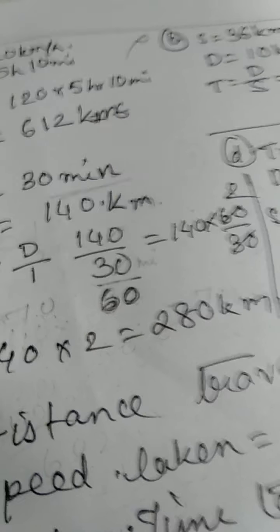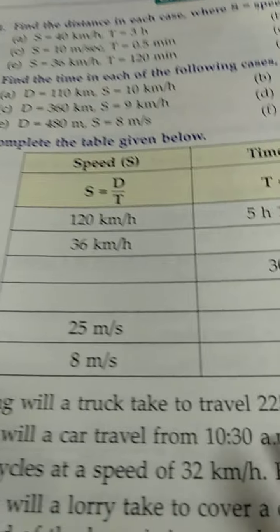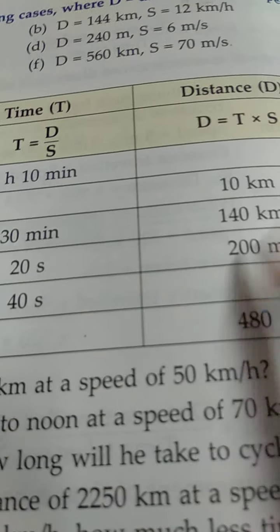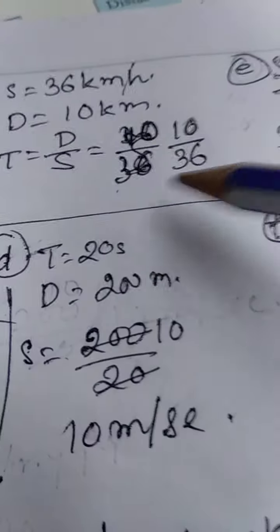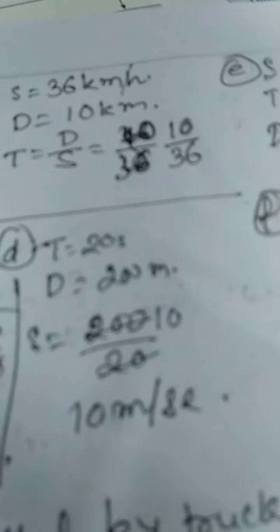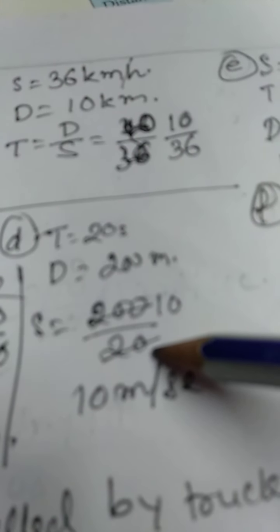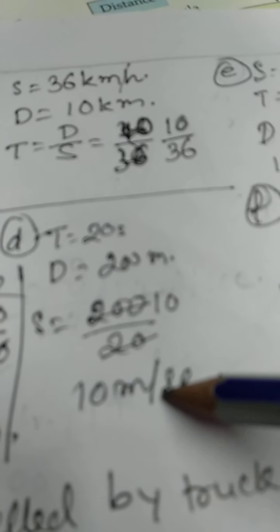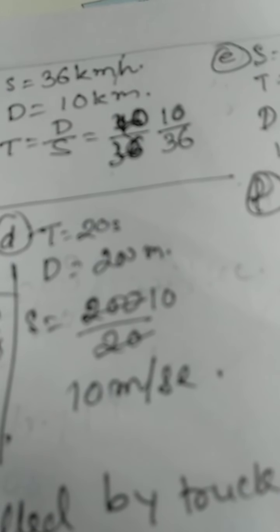Next, D. Speed is not given. Time is 20 seconds and 200 meters. It is in meters, so nothing has to be done. 200 by 20. Because D by T, 10. The speed will be 10 meters per second.